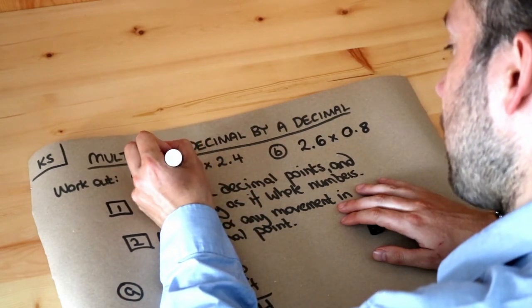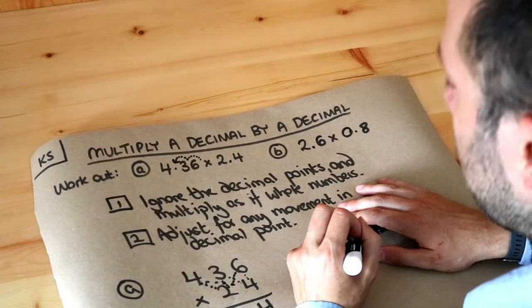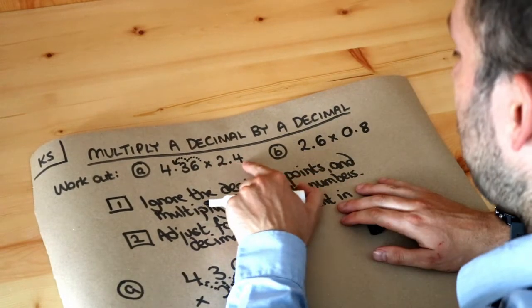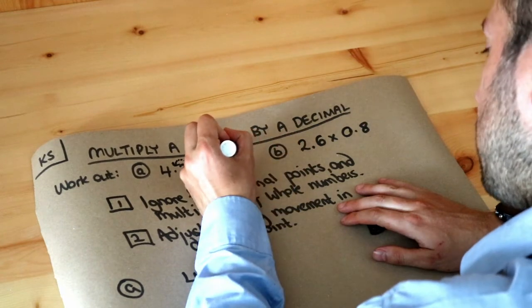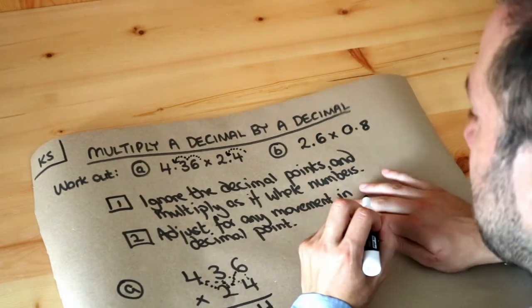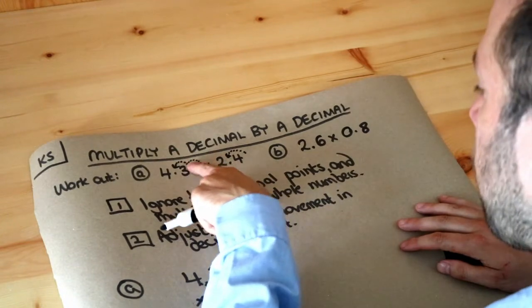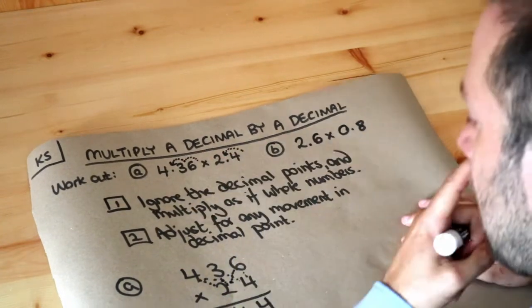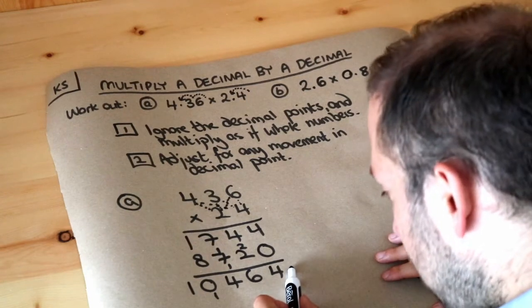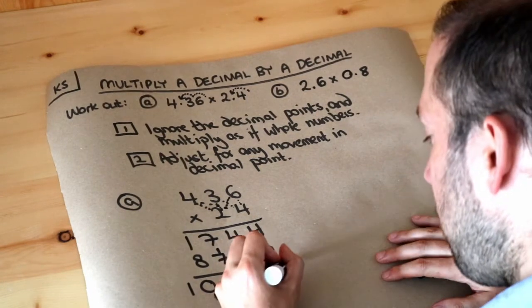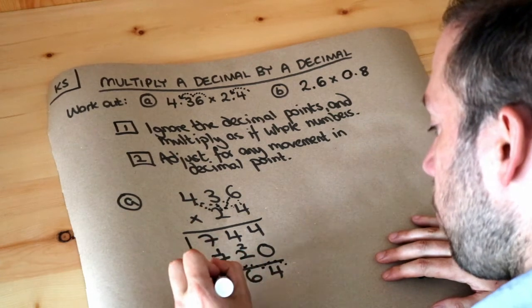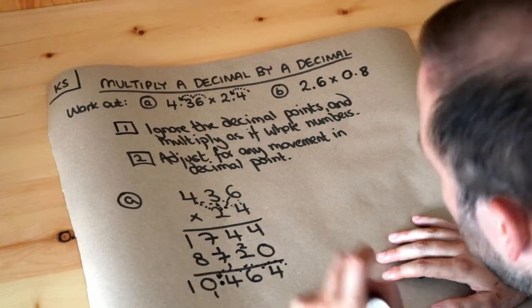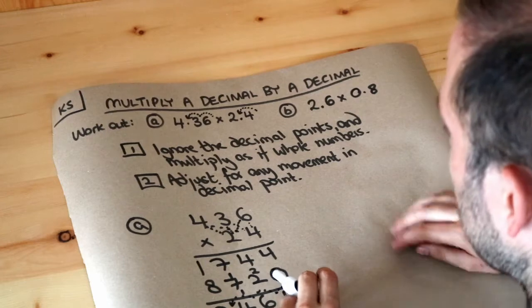two places to the left so that we actually have 4.36. And the same here, we've used 24, the decimal point is currently here but we want it to be there, so that's one movement. So let's count those movements: that's 1, 2, and then a third movement here in total. So the decimal point is currently here, it's after the units digit. If we move it 1, 2, 3 places in total, we get 10.464.